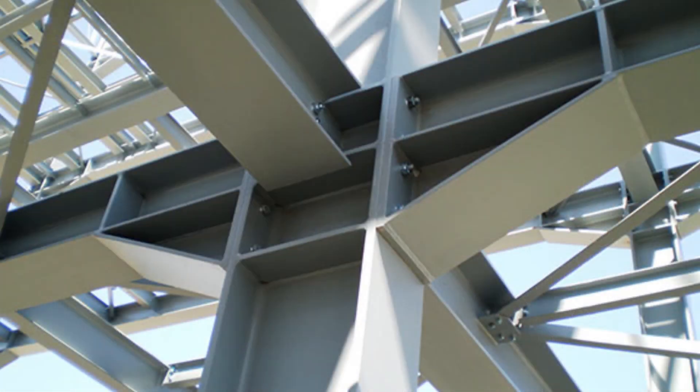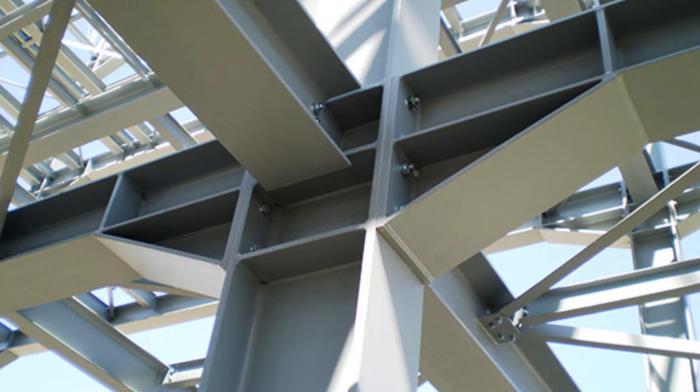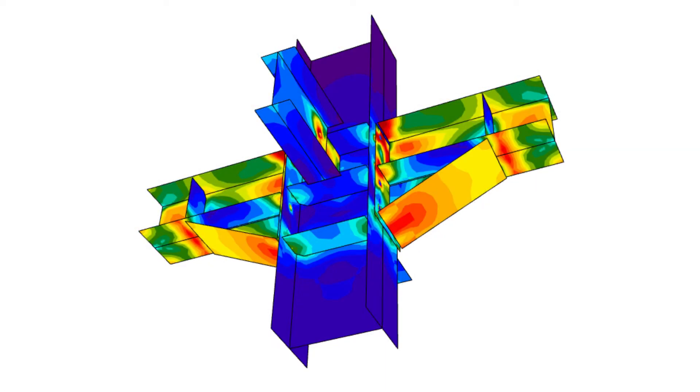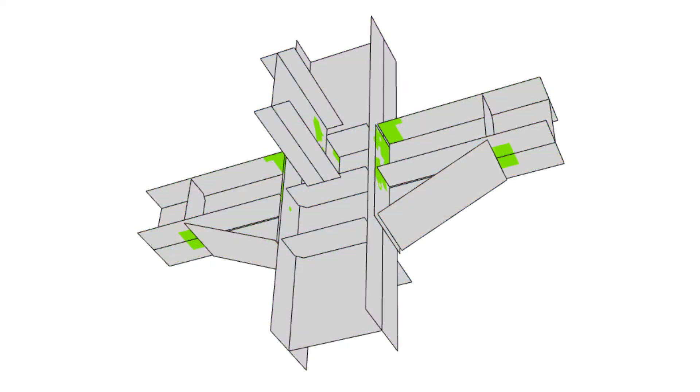In today's construction process, engineers have to work with increasingly complex joints, even in ordinary steel structures. Using simplified assumption of internal forces is not feasible here and leads to extra material usage or risk of construction defect. Component-based finite element model allows to predict behavior of all structural steel joints with the same accuracy and reliability.